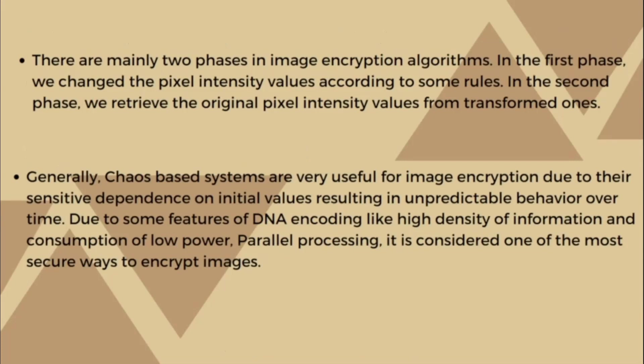There are mainly two phases in an image encryption algorithm. In the first phase we change the original image into an encrypted form by changing every pixel intensity value according to some rules. In the second phase, we retrieve the original image back from the encrypted one by retrieving the original pixel intensity values according to the same rules.